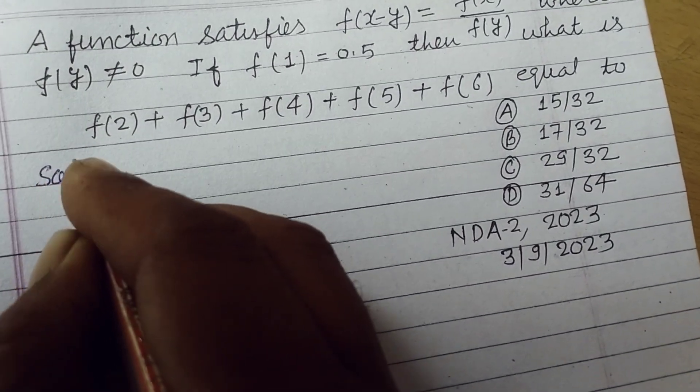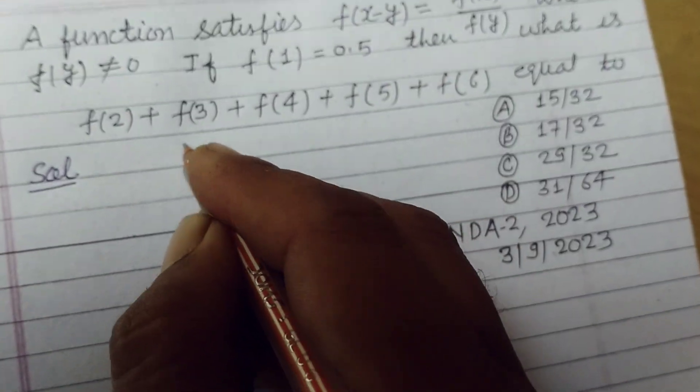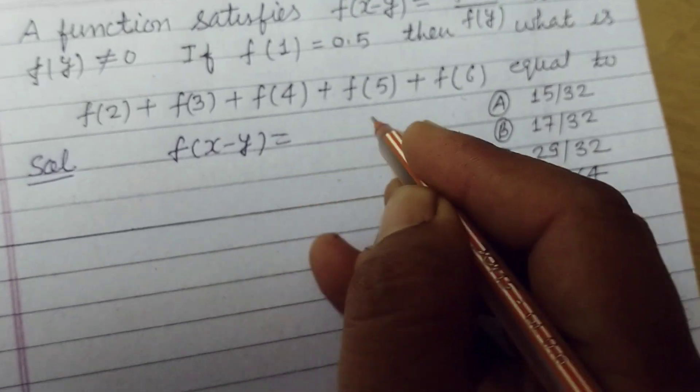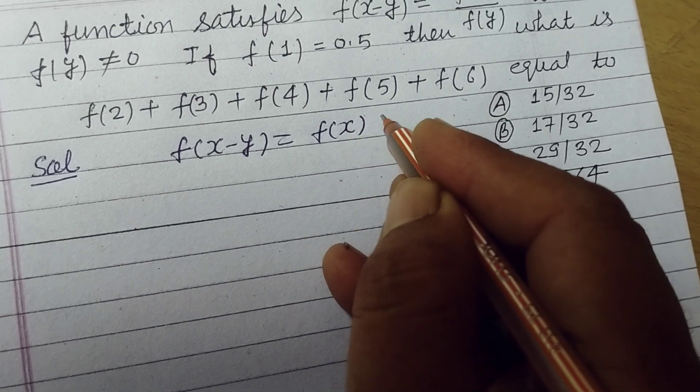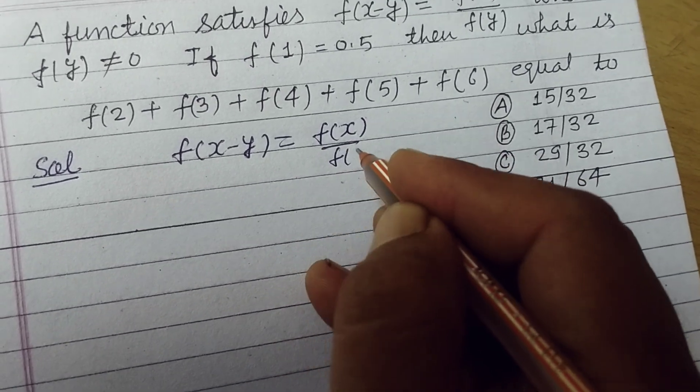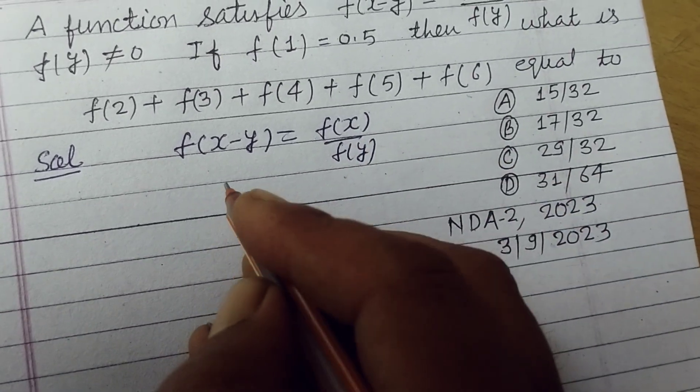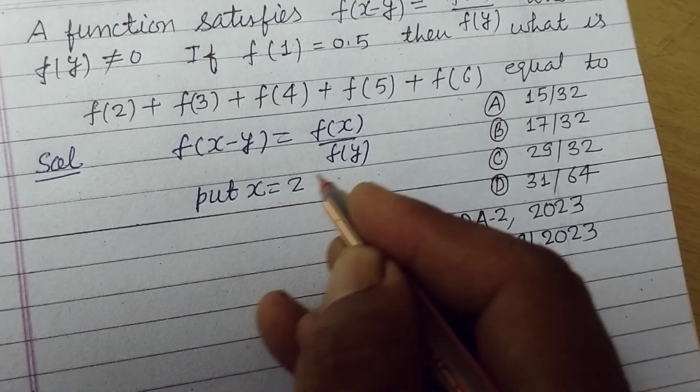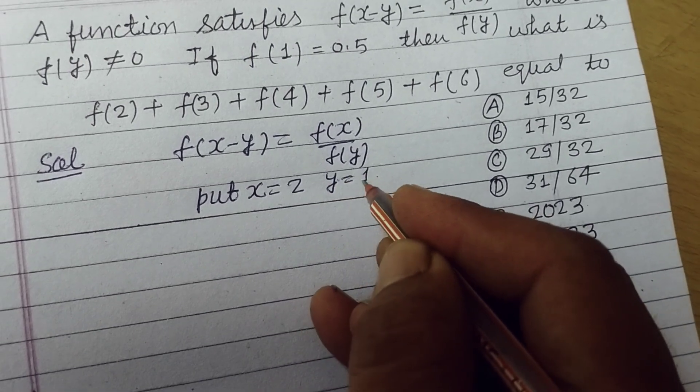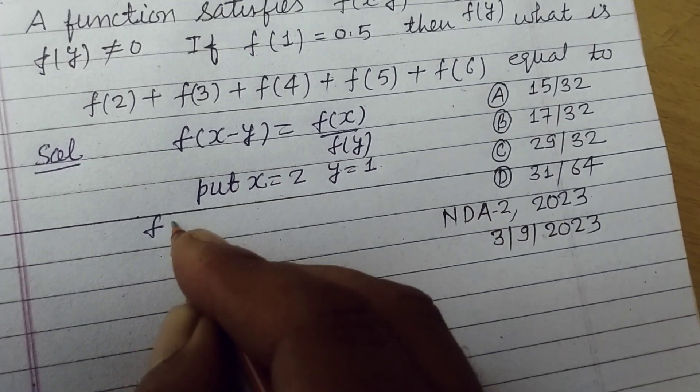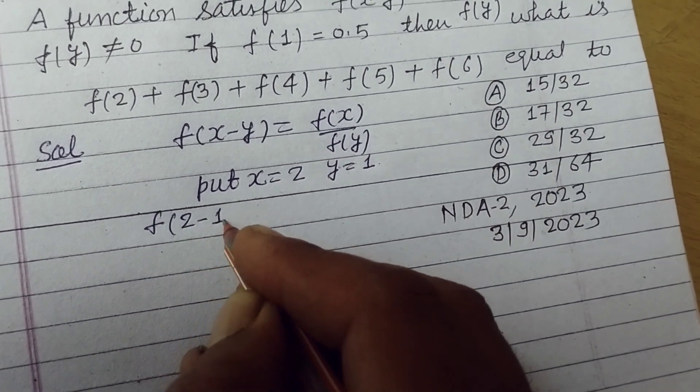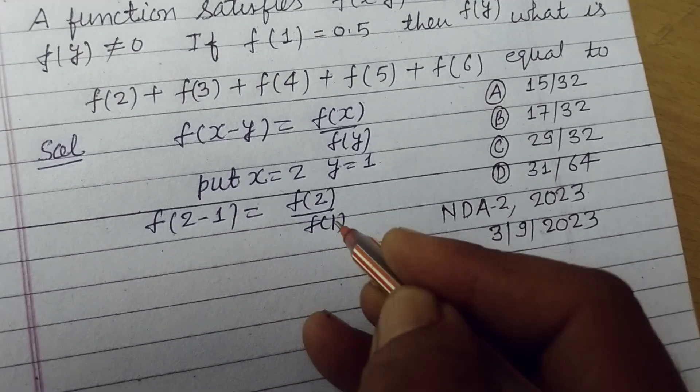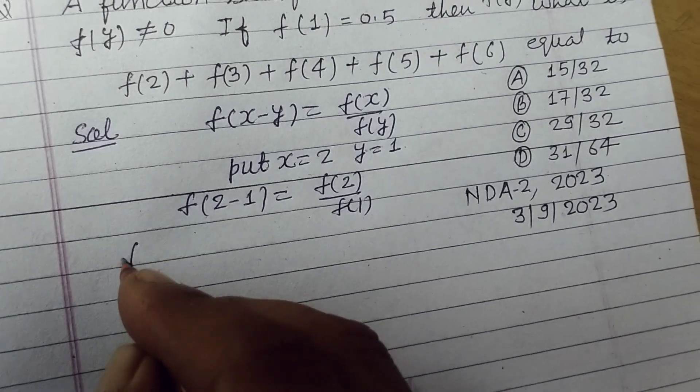So student, here we have f(x-y) equal to f(x) over f(y). Put x equal to 2, y equal to 1 in this. We got f(2-1) equal to f(2) upon f(1), and this is f(1).